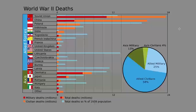You have a bar graph with military deaths, civilian deaths, and total deaths in millions. What I also find interesting about this particular visualization is that it gives you a data category called total deaths as a percentage of the 1939 population. For a lot of countries involved in World War II in Europe, these are enormous percentages. Poland, for example, lost probably close to 20% of its 1939 population in World War II.